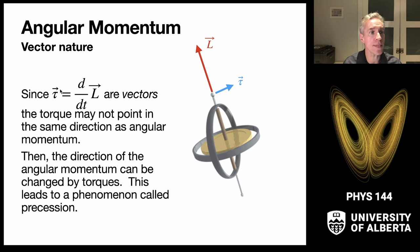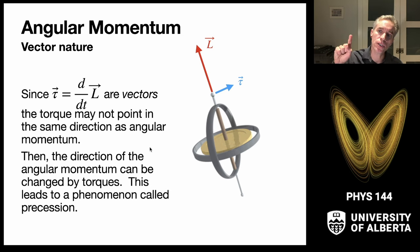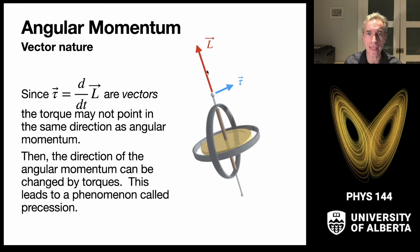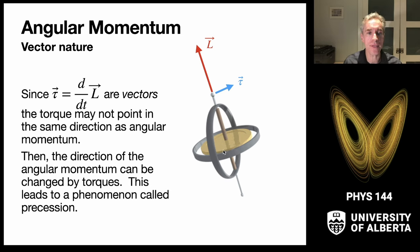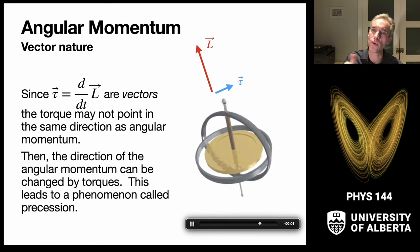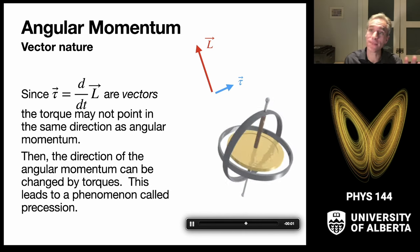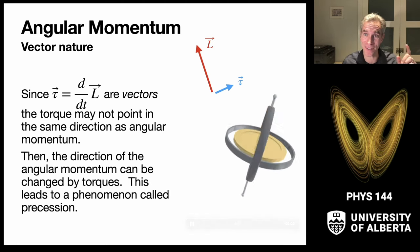Since torque is the time derivative of angular momentum, and the torque may not point in the same direction as the angular momentum, the torque can change the direction of angular momentum. This is seen in gyroscopes: a spinning mass creates an angular momentum vector along its axis. If a torque acts not aligned with that angular momentum, it may change its direction rather than magnitude, leading to precession — where the gyroscope rolls around because torque and angular momentum are not aligned.